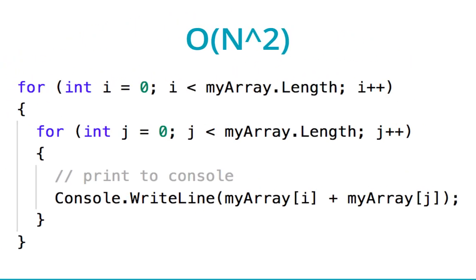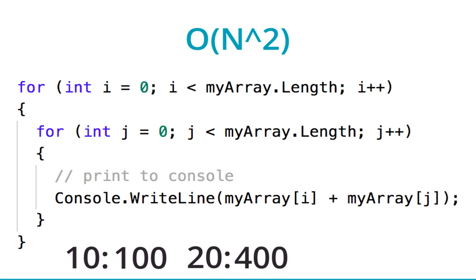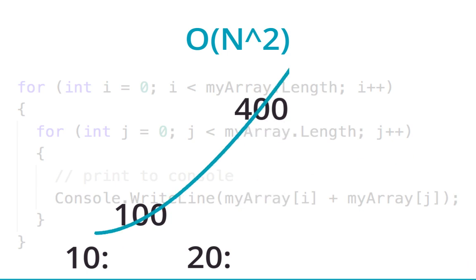Now let's look at an N squared example. The key here is that the loops are nested, meaning one loop is inside the other loop. If we have an array of length 10, the console.writeline executes 100 times: the outside loop runs 10 times, and each of those 10 times the inner loop runs 10 times — so that's 10 times 10, which is 100. If we double the size of the array from 10 to 20, the iterations quadruple to 20 times 20, which is 400 loops. The rule of thumb is that when you have a loop inside another loop, it's generally N squared.